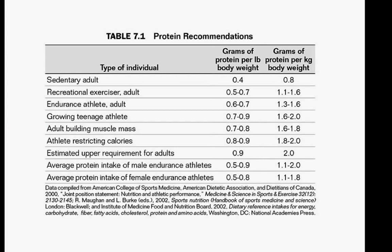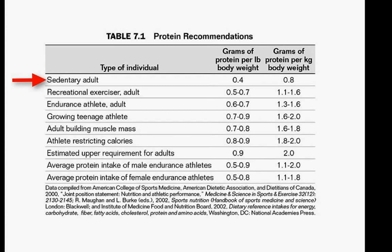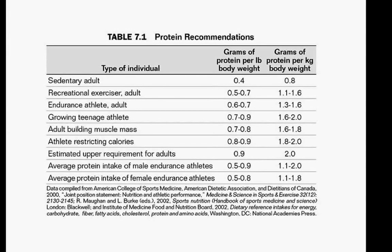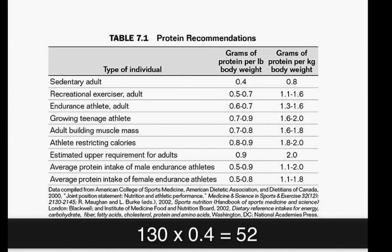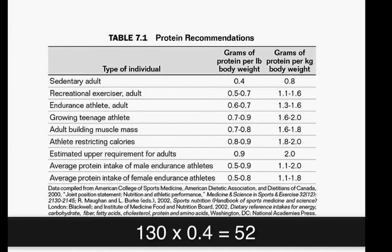There is an upper limit to how much protein should be consumed a day: 0.9 grams per pound of body weight. What if our 130-pound person is sedentary? How many grams of protein will he need? To find this answer, multiply 0.4 times 130. Did you get 52? That's correct — 130 times 0.4 equals 52 grams of protein a day.